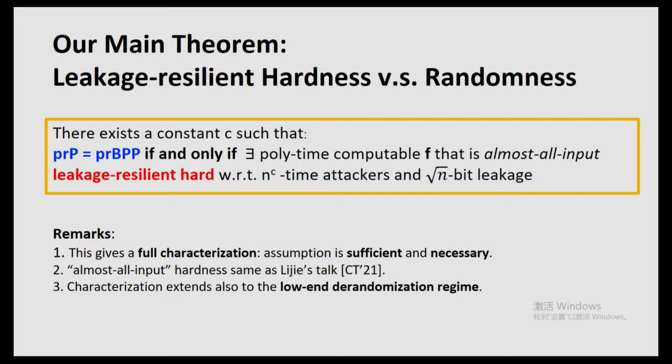Our main theorem says BPP equals P if and only if there exists a polynomial-time computable function F that is almost-all-input leakage-resilient hard with respect to a priori bounded polynomial-time attackers and a priori bounded length of leakage. The constant C here is most likely just three. Taking the leakage bound to be square root of n, we obtain BPP equals P if and only if there exists a function F that is almost-all-input leakage-resilient hard with respect to n-cubed-time attackers and square-root-of-n leakage. This gives a full characterization of derandomization — the assumption of leakage-resilient hardness is both sufficient and necessary.